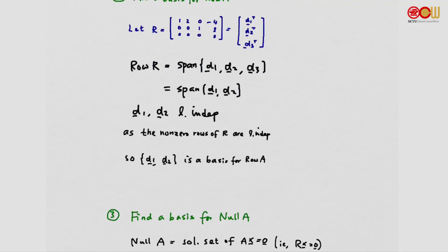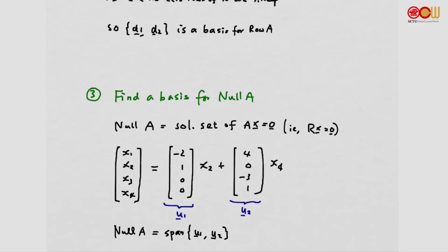Now for the null space of A. The null space of A by definition is the solution set of the homogeneous equation. We use Gaussian elimination to find the vector form of the general solution, and the null space of A is the span of these two vectors.